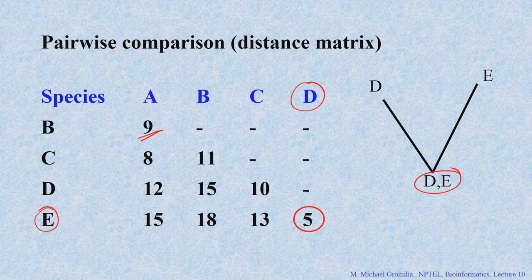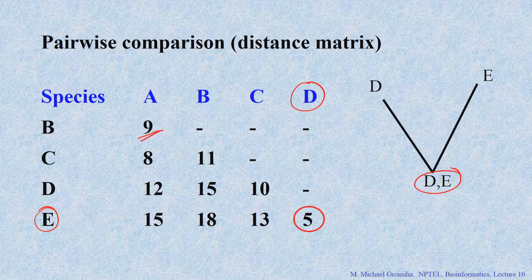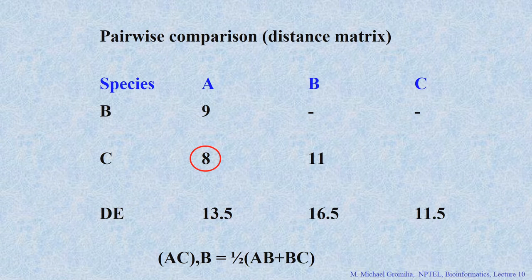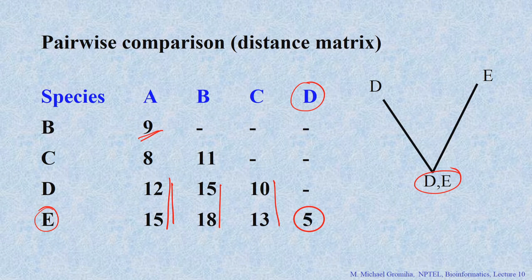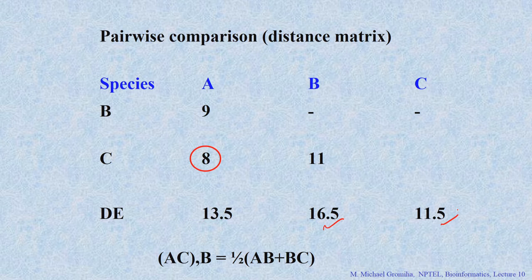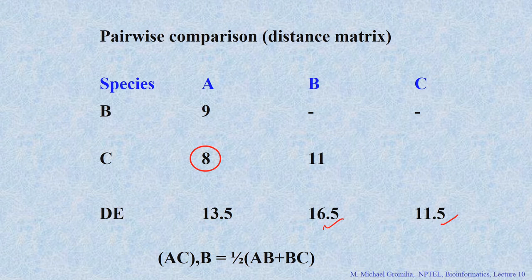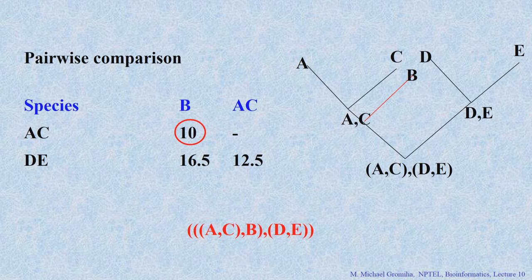From the updated matrix, which is the lowest number? 8 is the lowest. The values are: 9, 8, 11, 13.5, 16.5, and 11.5 — so 8 is the lowest. This means A and C are closest to each other. So we can see that A and C are close to each other in the tree.